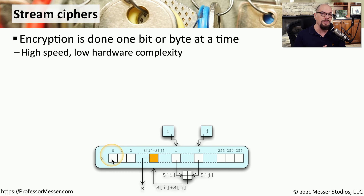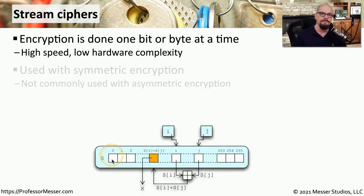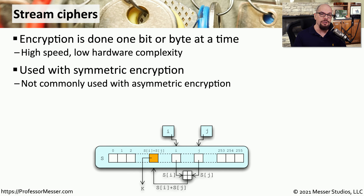This also means that we would not need as complex a hardware or CPU infrastructure to be able to encrypt just a single byte of information. You often see stream ciphers used with symmetric encryption, where there is a single key used for encryption and that same key is used for decryption. You don't often see asymmetric encryption used in these stream ciphers because of the overhead and additional time it takes to encrypt and decrypt with asymmetric encryption.